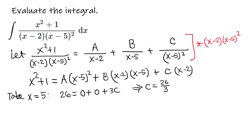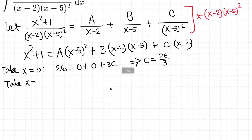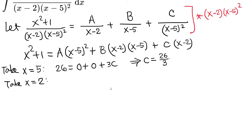Similarly, take x equals 2 to isolate A. Then 2 squared plus 1 equals 5, and 2 minus 5 equals negative 3, so (negative 3) squared is positive 9. The B and C terms vanish because (x minus 2) equals 0. So 5 equals 9A, meaning A equals 5 over 9.